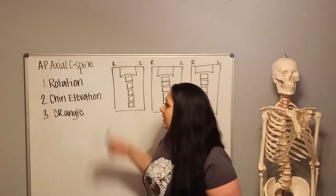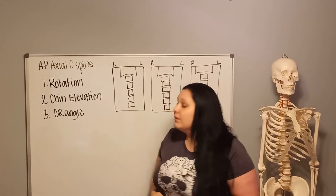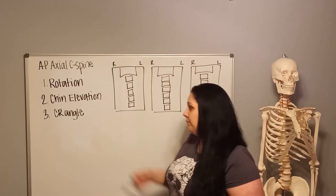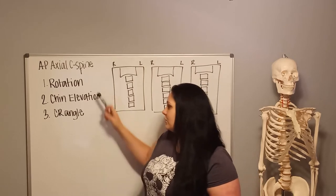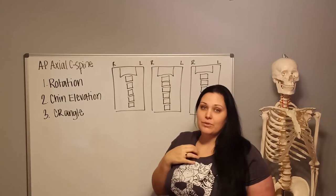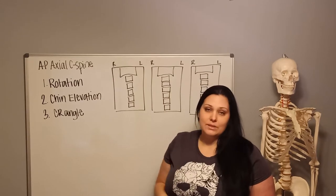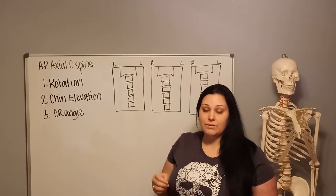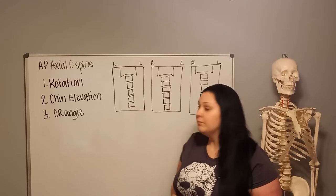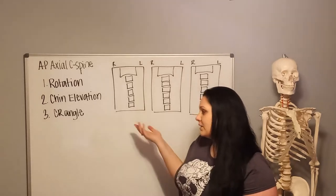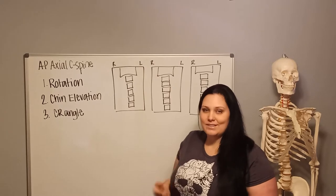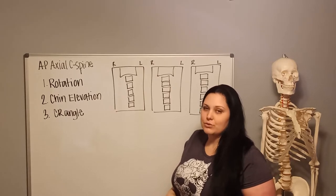For the AP Axial C-Spine, there are three things that we're going to evaluate: rotation, chin elevation, and your CR angle. Remember, for an AP Axial C-Spine, your CR angle should be 15 to 20 degrees cephalic. And when it's not correct, we'll learn exactly how that can affect your image.